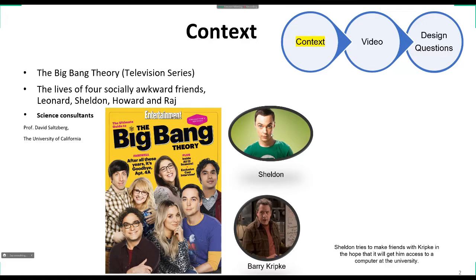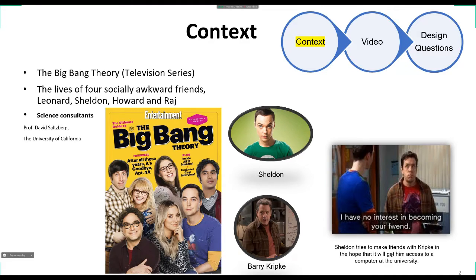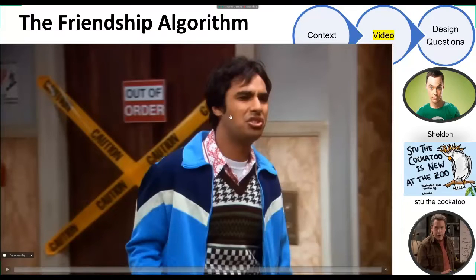This video that you're going to see is about design. It's an interaction between Sheldon and Dr. Barry Kripke. Sheldon tries to make a friend with Kripke because Kripke has some computer resource in the university and Sheldon wants to access this resource. So if Kripke is his friend, he'll be more willing to share these resources. It's a normal situation.